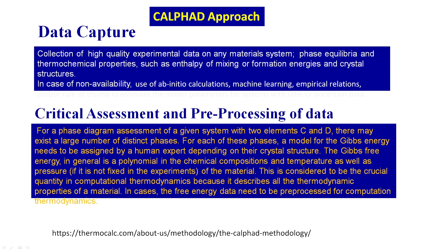In many cases, such data is either not available or only partially available. In that case, you have to use ab initio calculations like DFT, or machine learning, or empirical relationships. It is important to make that data available to everybody for genuine scientific purposes. After data capture, the next stage is critical assessment and pre-processing of data.